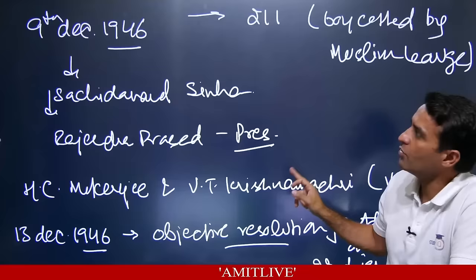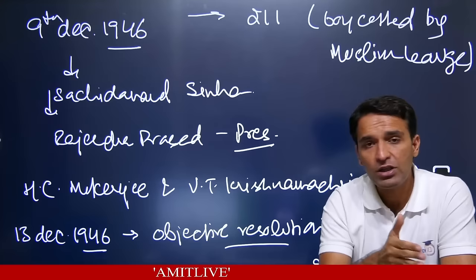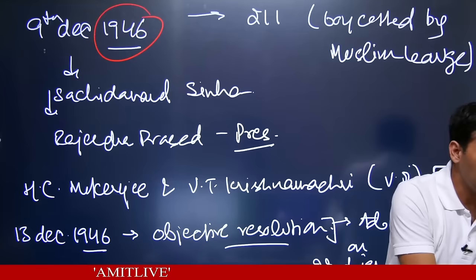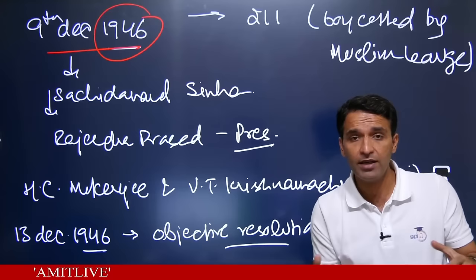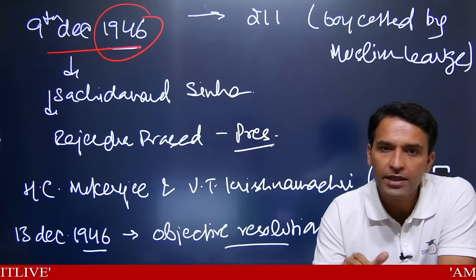December 1946 was when the Constituent Assembly was to meet. But Muslim League chose not to join. So on 9th December 1946, instead of the expected 389 people, only 211 were present — 207 from Congress and 4 independents. The princely states' 93 members also did not join.